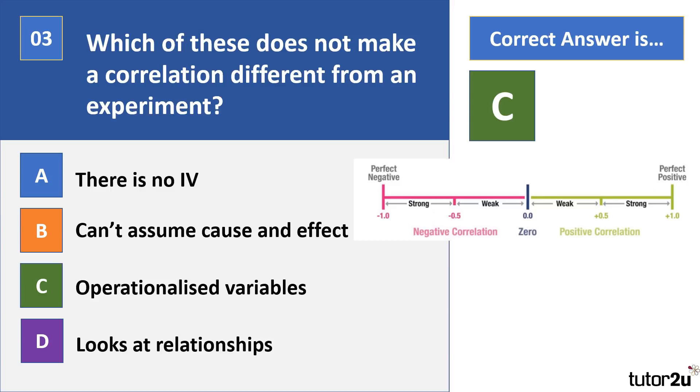Okay, now I hope you read the question closely because the question is does not make a correlation different from an experiment, so it's C, operationalized variables. Both correlations and experiments share the need to operationalize variables.